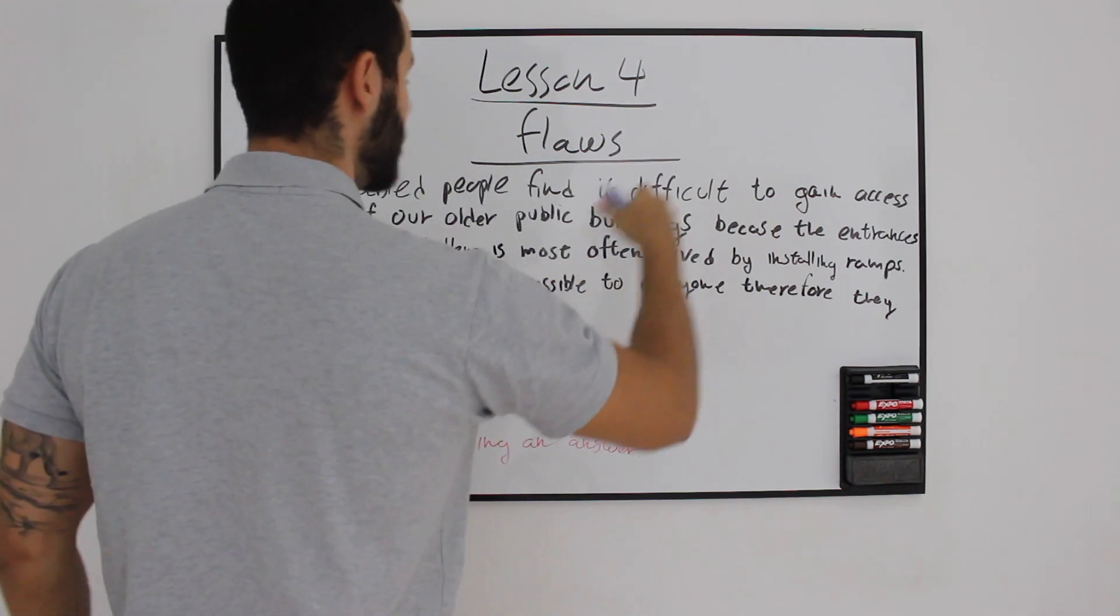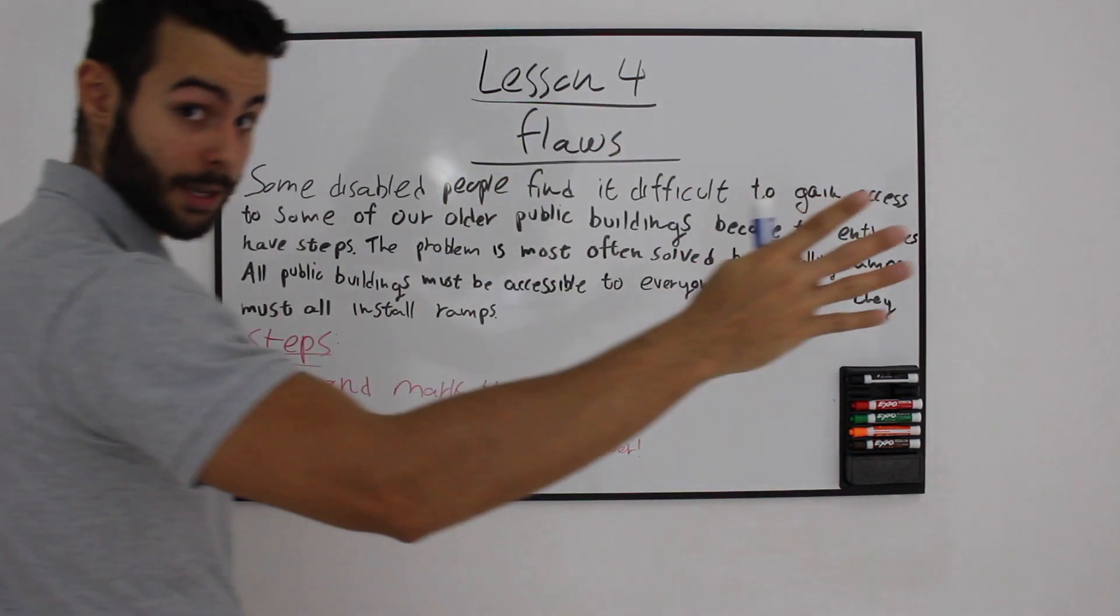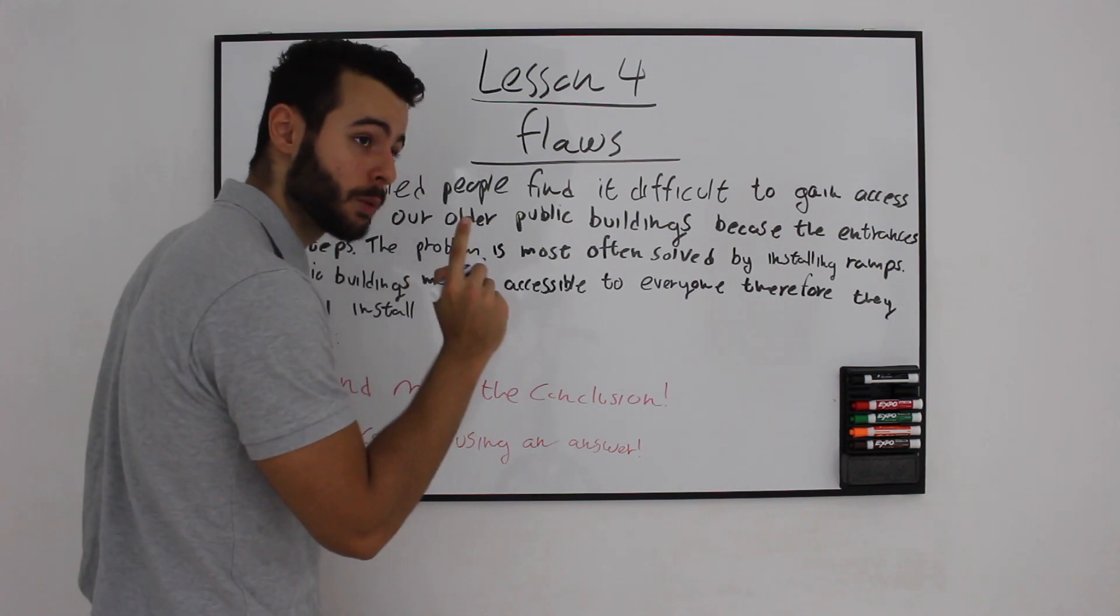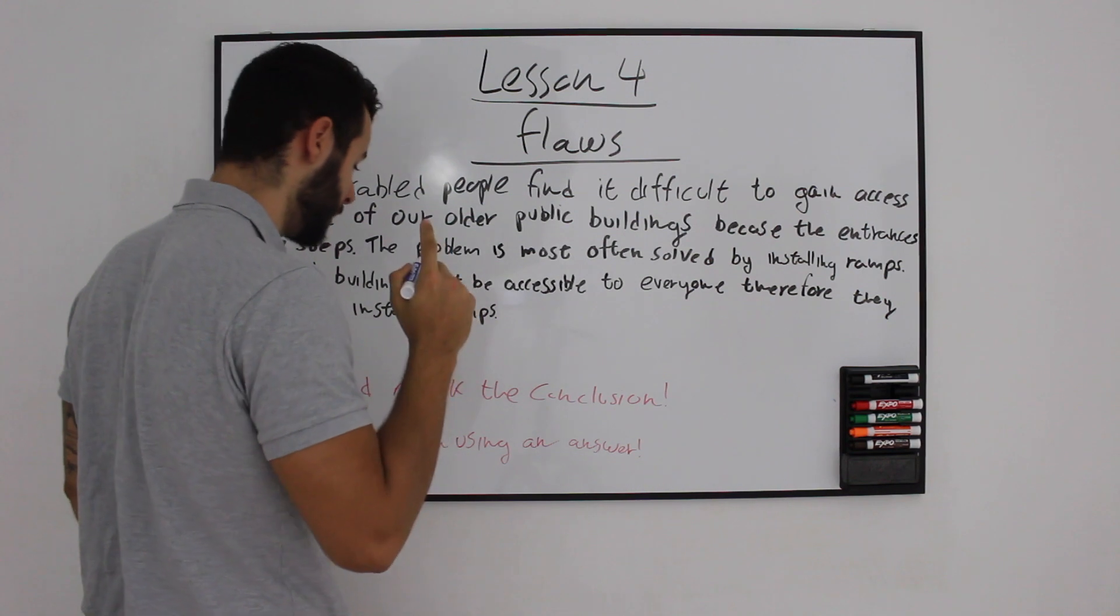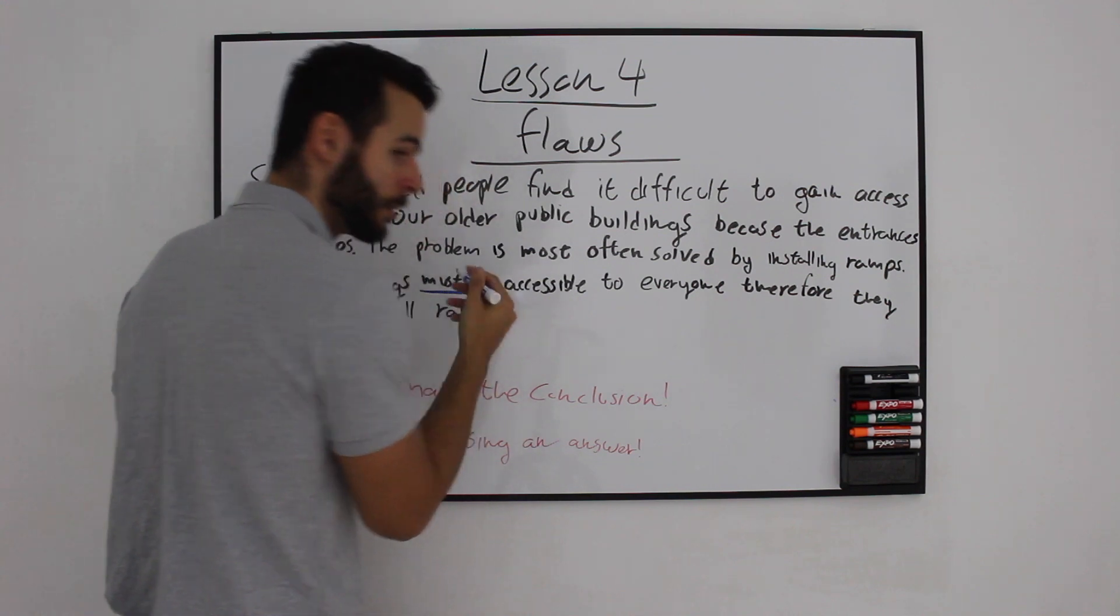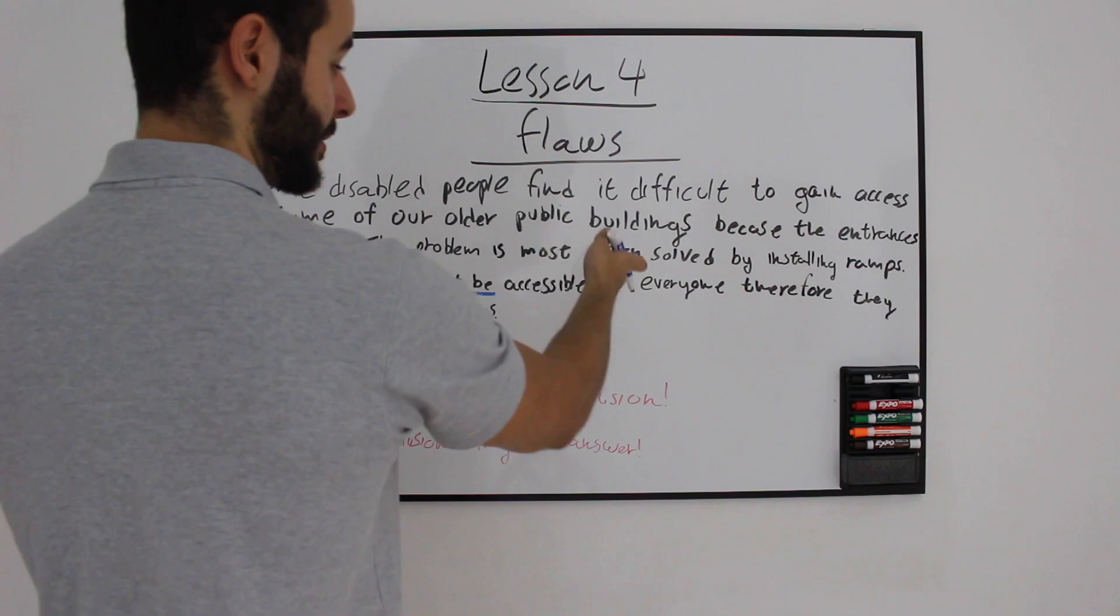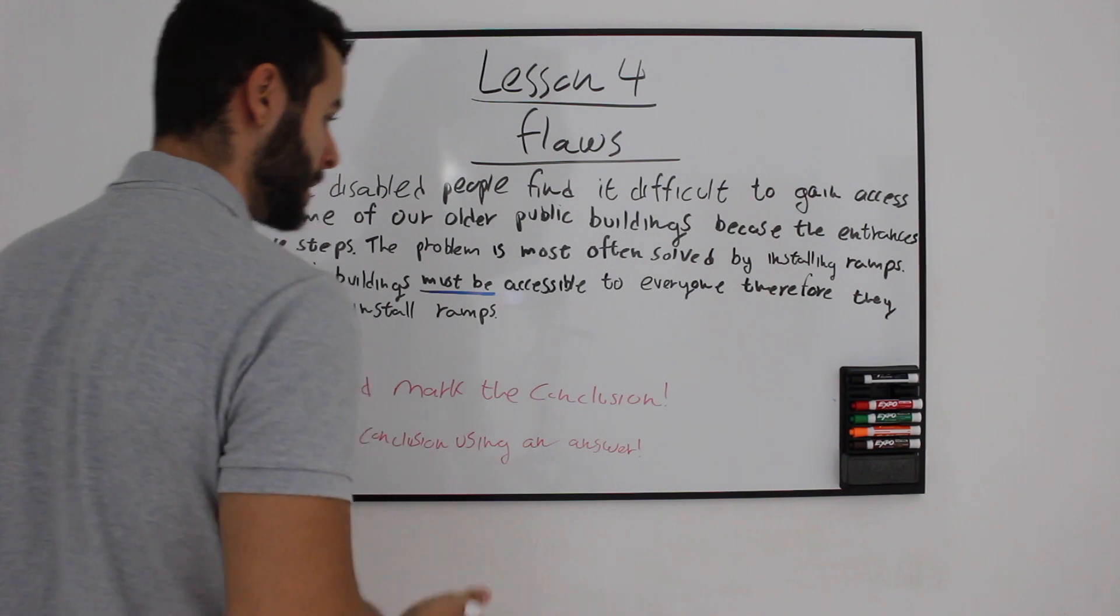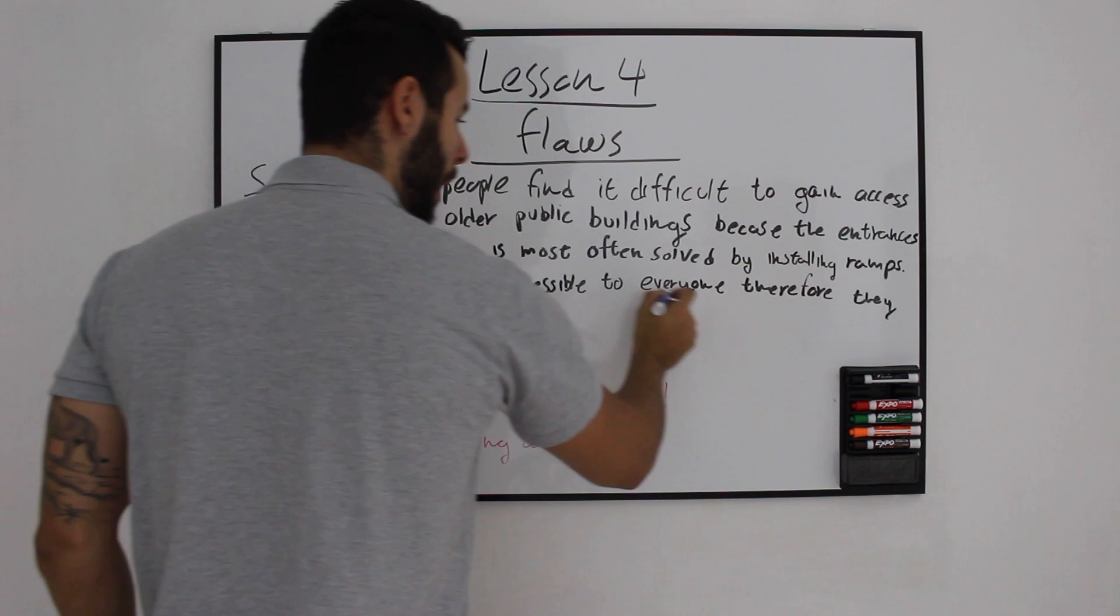The problem is most often solved by installing ramps. All public buildings must - first of all, when you see the word must or some word similar to the word must, it has to light a bulb inside your brain - it's probably going to give us our conclusion. Especially when you have a problem, any solution, usually the paragraph, the writer's paragraph gives you a solution to something he's complaining about.